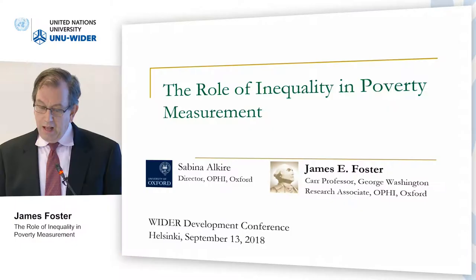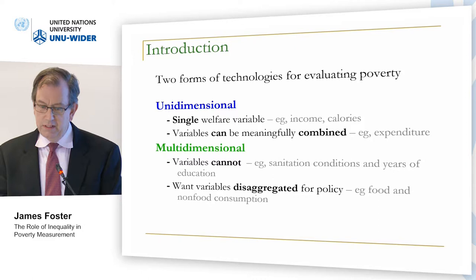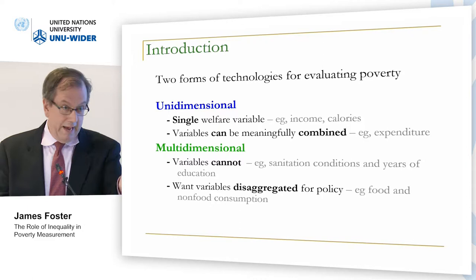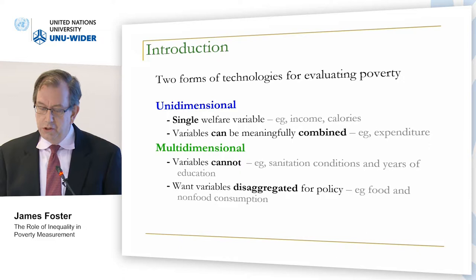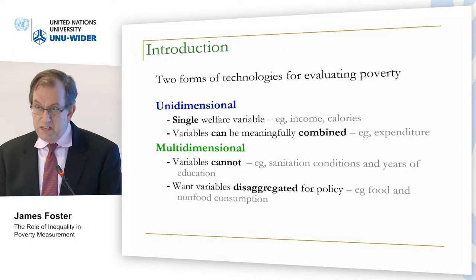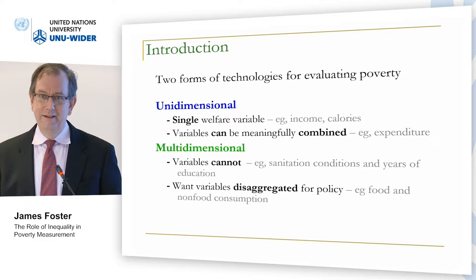There are two forms of technology for evaluating poverty. The first is unidimensional, where you have a natural single welfare variable, such as income or calories like in our first paper, or where variables can be combined meaningfully to obtain one variable, such as expenditure.